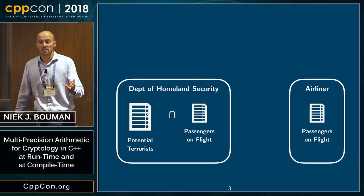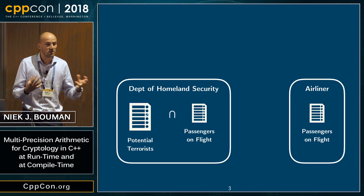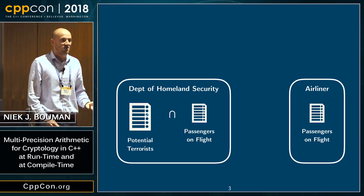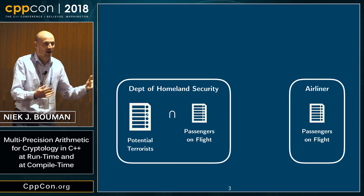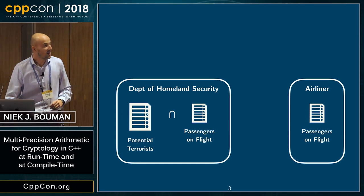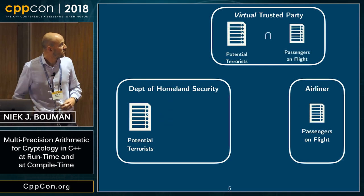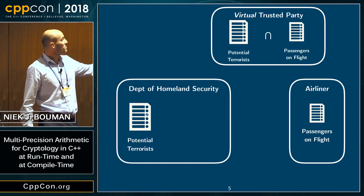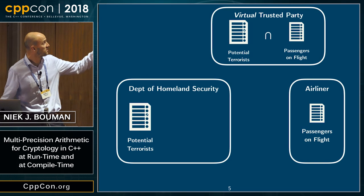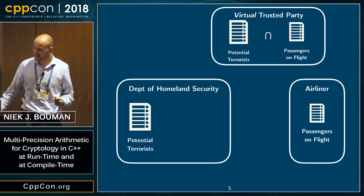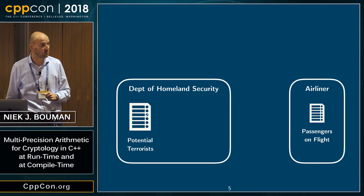I can understand that they want to do this, given events like 9/11. But I'm not a terrorist myself, so why should my data go there and probably stay there? What I would prefer is that there is some trusted party to which my airliner sends my details, and also the Department of Homeland Security sends the list of potential terrorists, and then this intersection is computed at that trusted party. If that intersection is empty, all the information will just be forgotten — which, from a privacy perspective, would be much better.